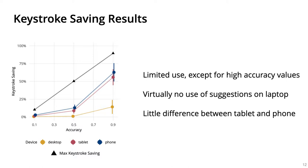Keystroke saving increases with accuracy, though note that this is not linear. In fact, participants did not use much suggestions except when they were extremely accurate. 90% accuracy feels like the system is reading your mind, but even then, suggestions were virtually not used at all on a laptop.